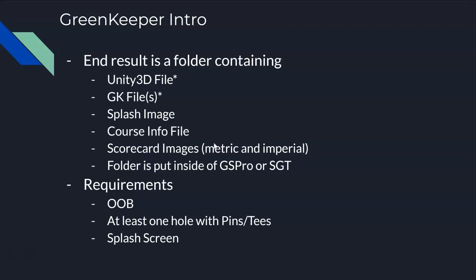You may have noticed asterisks next to the Unity 3D file and GK files. That's because this folder has very specific naming attributes — the folder name must match the name of your Unity 3D file and your Greenkeeper file. If you edit any of those and change the names, you're going to have problems. Also, do not have your out of bounds or any hazards overlapping each other — you can get mixed results. Make sure hazards do not overlap other hazards, and out of bounds does not overlap hazards.